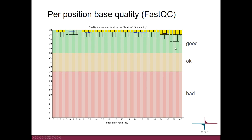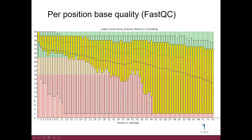Here we have an example of not-so-good data. As you can see, the mean quality value goes down towards the end of the reads. This is a bit older data — current sequencers cope better. But even with modern sequencers, if you make very long reads, the base qualities start to drop towards the end.